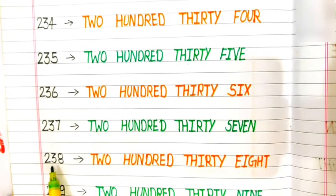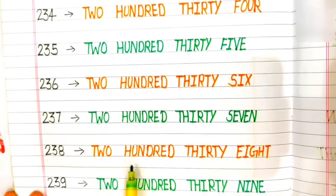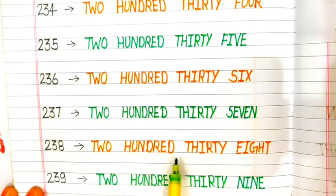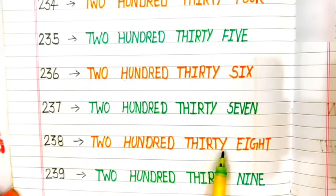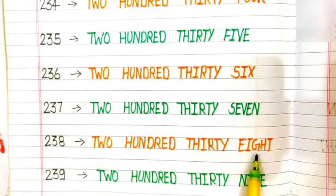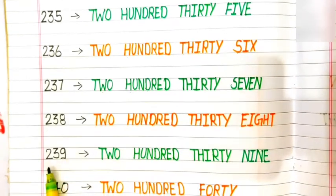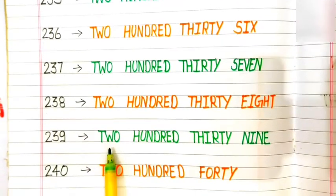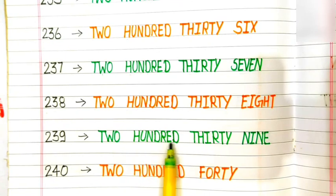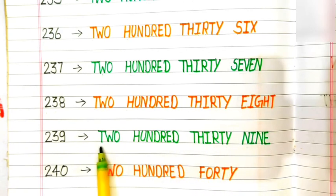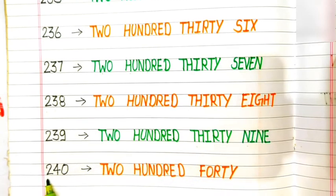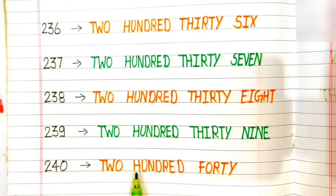237. 238: T-W-O H-U-N-D-R-E-D T-H-I-R-T-Y E-I-G-H-T. 238. 239: T-W-O H-U-N-D-R-E-D T-H-I-R-T-Y N-I-N-E. 239. 240: T-W-O H-U-N-D-R-E-D F-O-R-T-Y. 240.